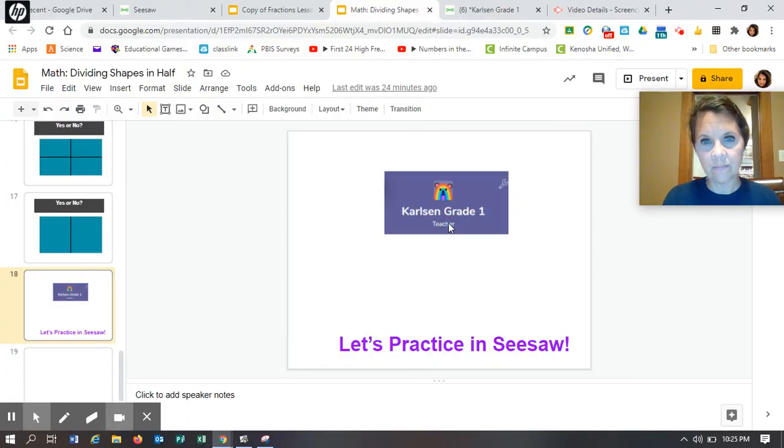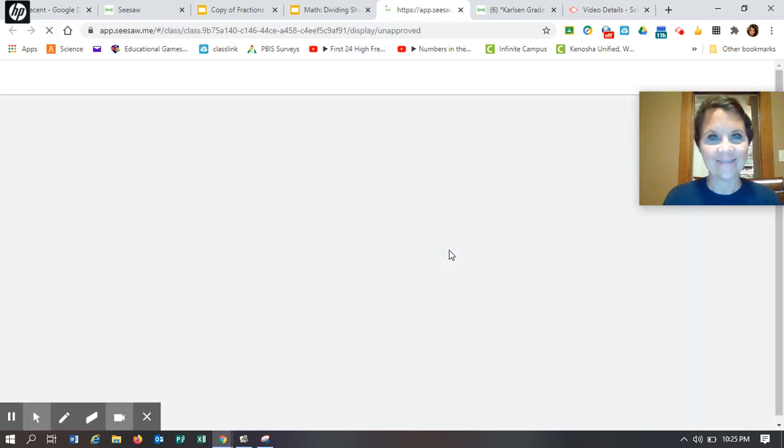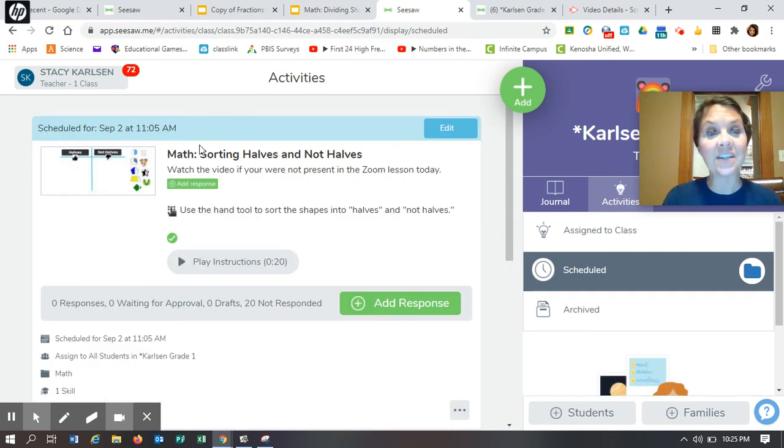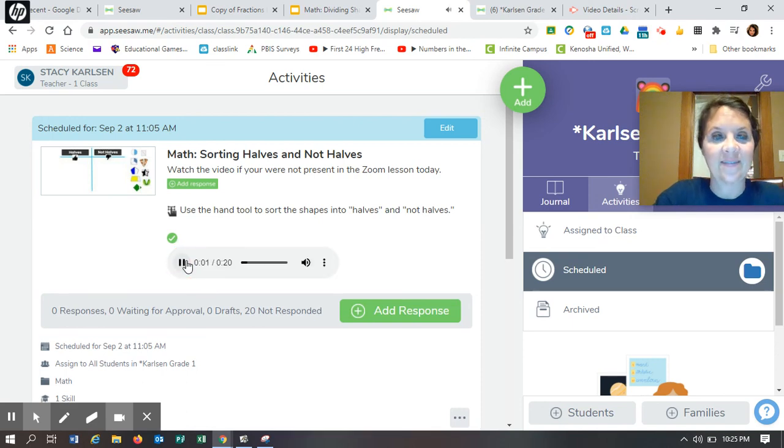Okay, so we're going to go into Seesaw. Go into your activities like we've been doing. When you get in, you're going to see an activity called Math Sorting Halves and Not Halves. You're going to click on the instructions. Watch the video if you are not present in the Zoom lesson today. Click on the green Add Response button.